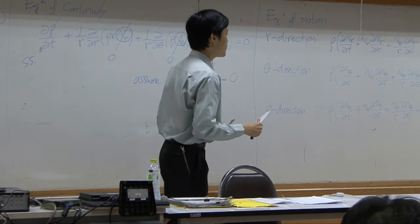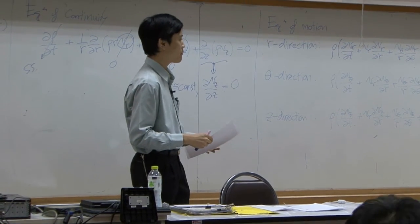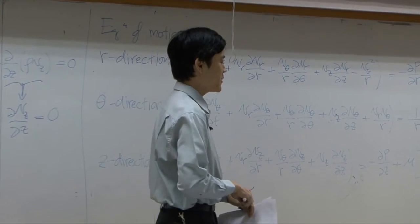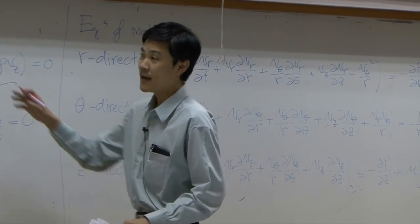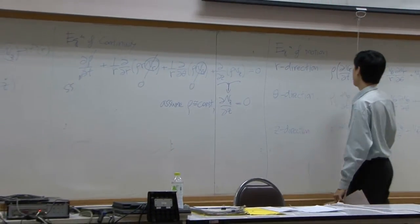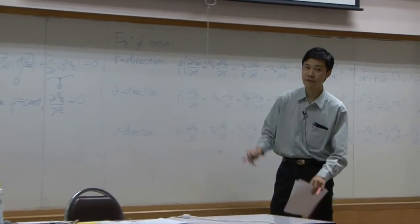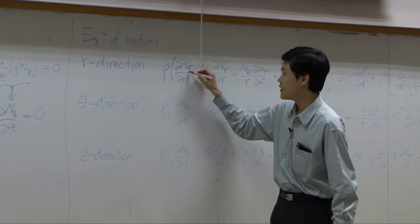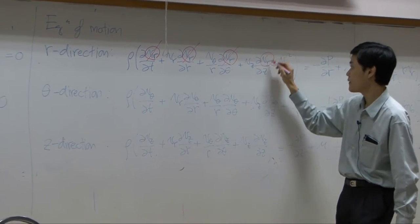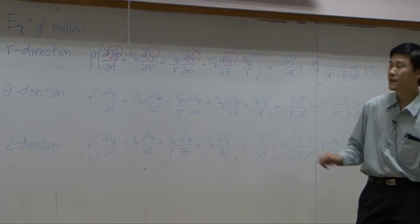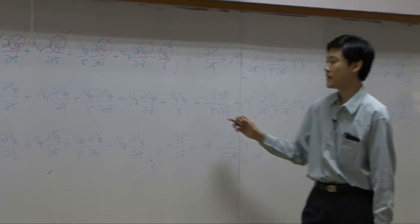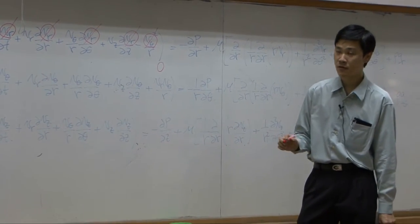All right, let's go back to our problem. We have the equation of motion. Let's start dropping terms. In this problem, V_r is zero, V_theta is zero, we have V_z only. So V_r: zero here, zero there, zero. V_theta is zero, this term is zero. So the left-hand side becomes zero.